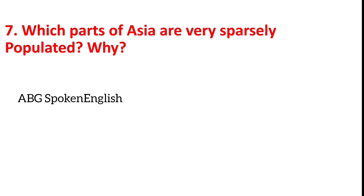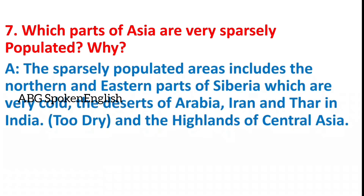Which parts of Asia are very sparsely populated, and why? The sparsely populated areas include the northern and eastern parts of Siberia, which are very cold, and the deserts of Arabia, Iran, and Thar in India, and the highlands of Central Asia.